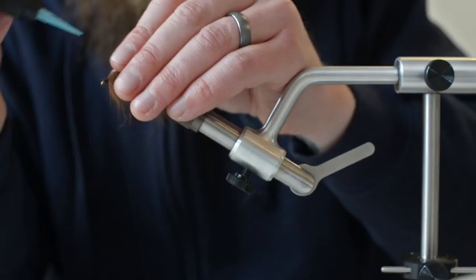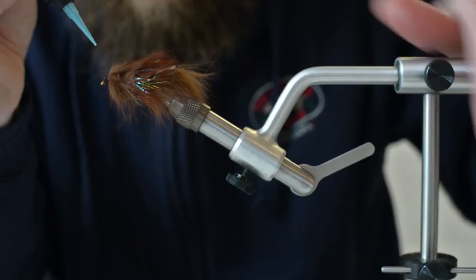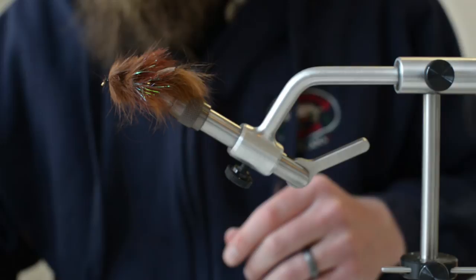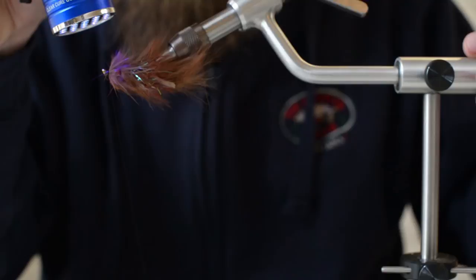And then let's throw on some UV thin finish and I'll just kind of coat that whole spot all the way around. Just add a little bit of extra weight to it for durability. Seal it in with my UV light.